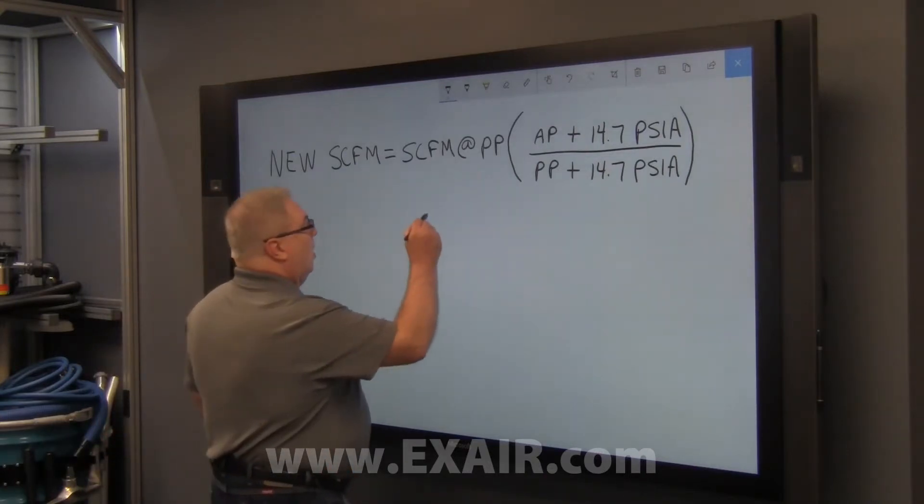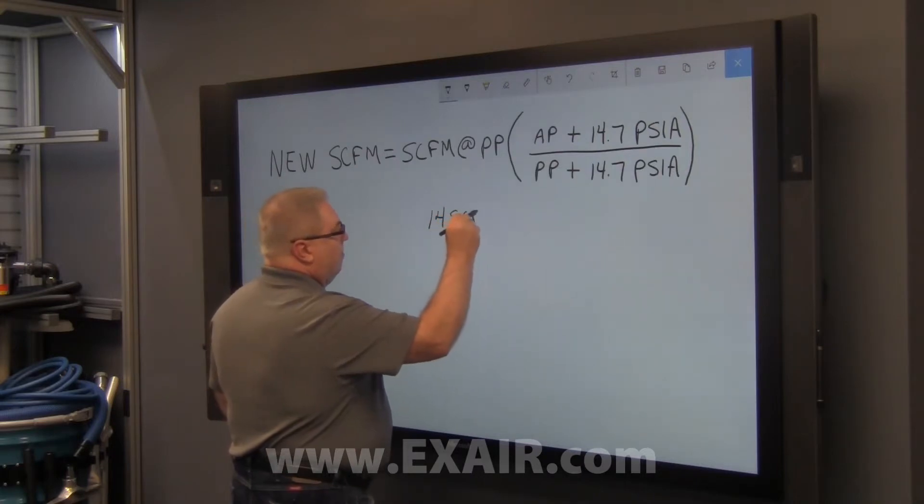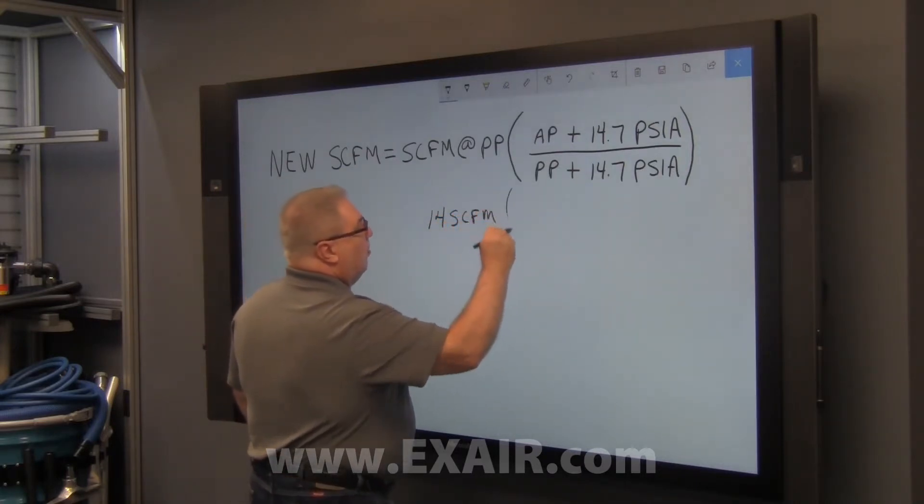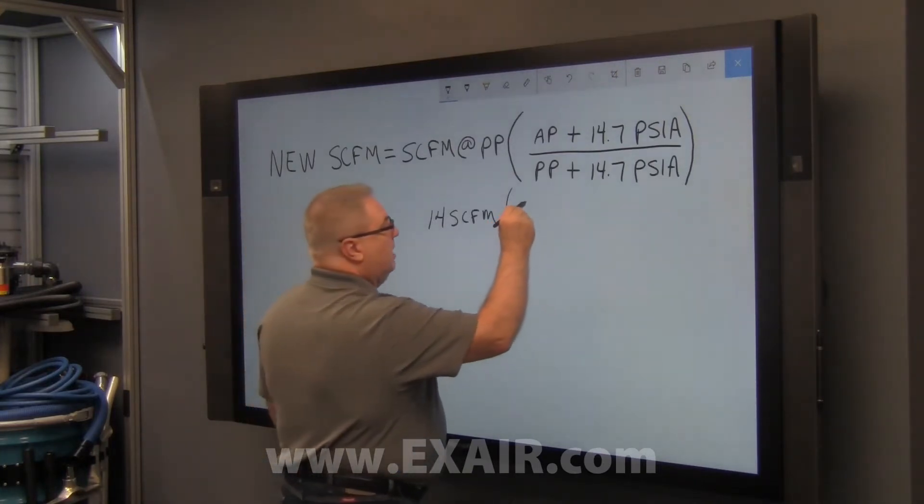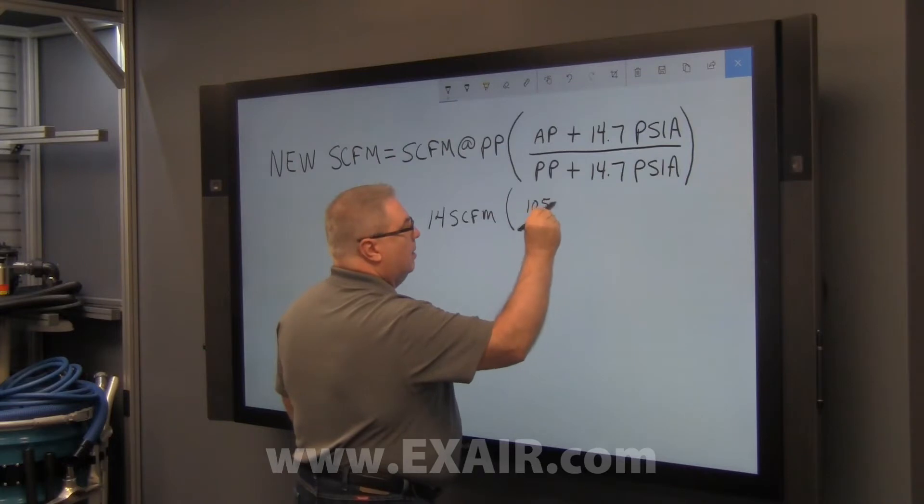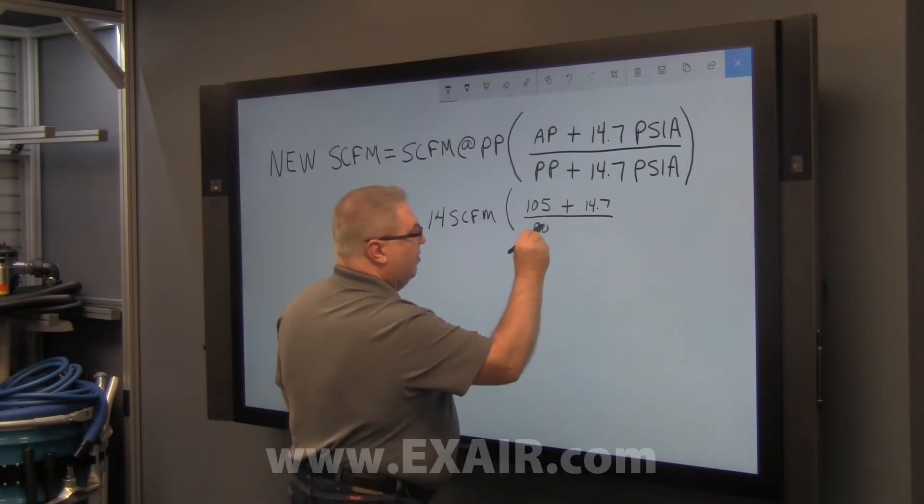Therefore, we plug in 14 SCFM multiplied by our actual pressure, and for this example, let's use 105 PSIG plus atmospheric over the published pressure, 80 PSIG plus atmospheric.